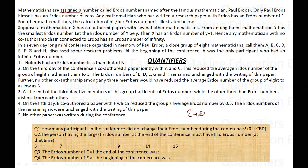Any mathematician who has co-authored a paper with Erdős has an Erdős number of one. So if person C has written a paper with Erdős, C's Erdős number will be one. For other mathematicians, the calculation of the Erdős number is as given below.